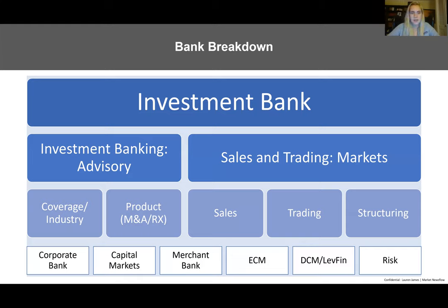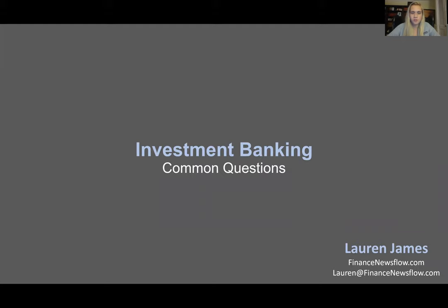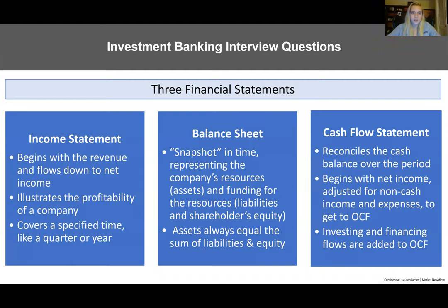If that all makes sense, let's move on and talk about common questions for investment banking. The key to answering many of these is knowing the three financial statements inside and out. The income statement begins with revenue and flows down to net income, illustrating a company's profitability over a specified time period like a quarter or a year. This is similar to the cash flow statement in that it covers a period of time, unlike the balance sheet which is a specific snapshot in time.